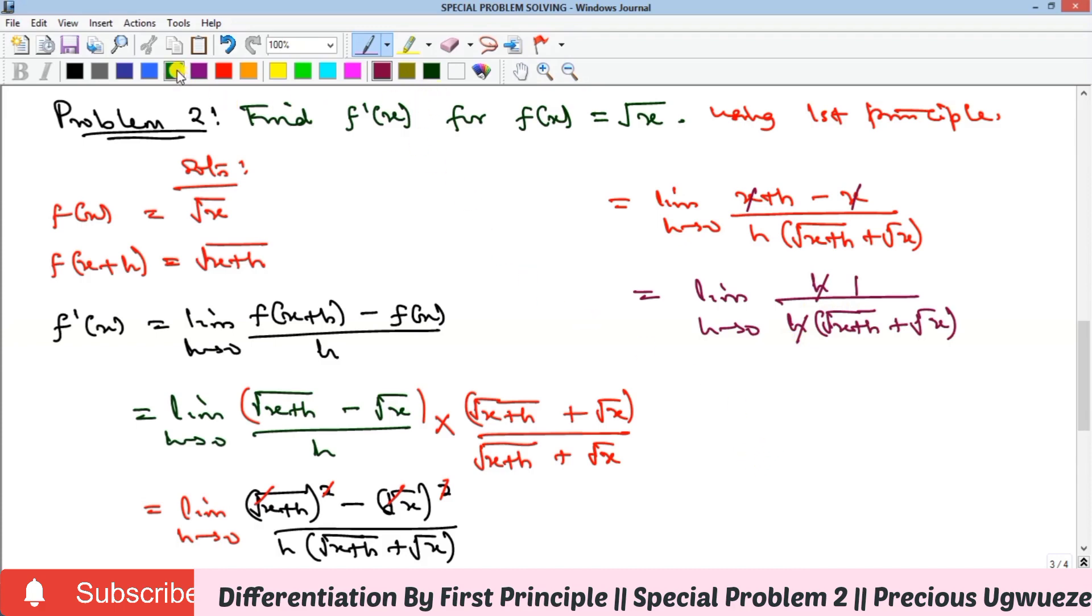You just have the limit as h goes to zero of 1 over [√(x + h) + √x]. At this point, we can do a direct substitution. If you do that, our h will become zero, and when h becomes zero, we only have √x + √x.